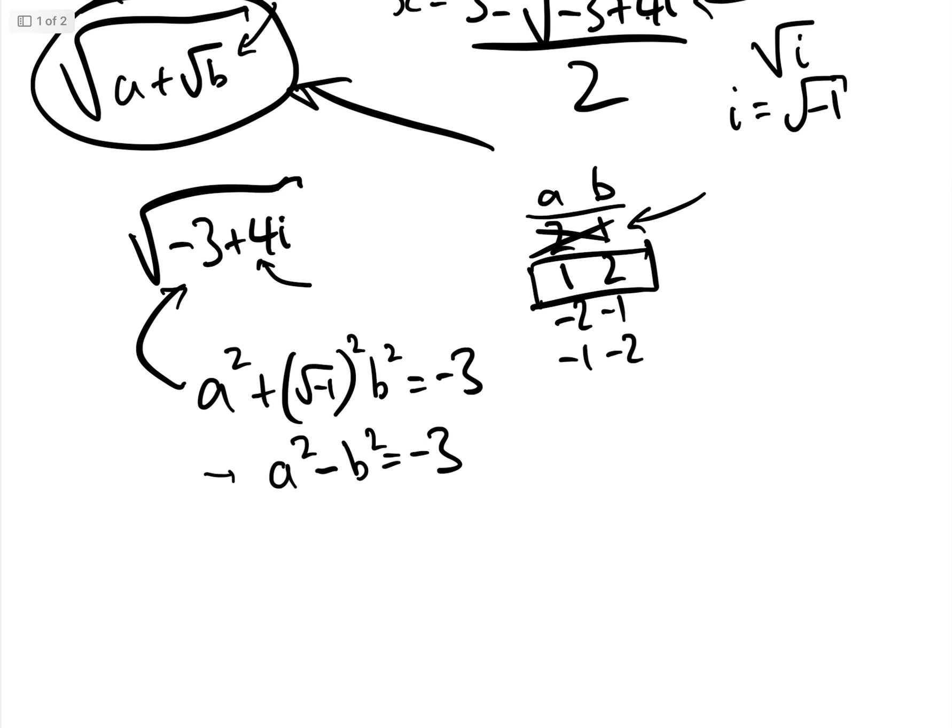So therefore, we know that minus 3 add 4i can be written as 1 add 2i squared. Basically, that is the a and that is the b.